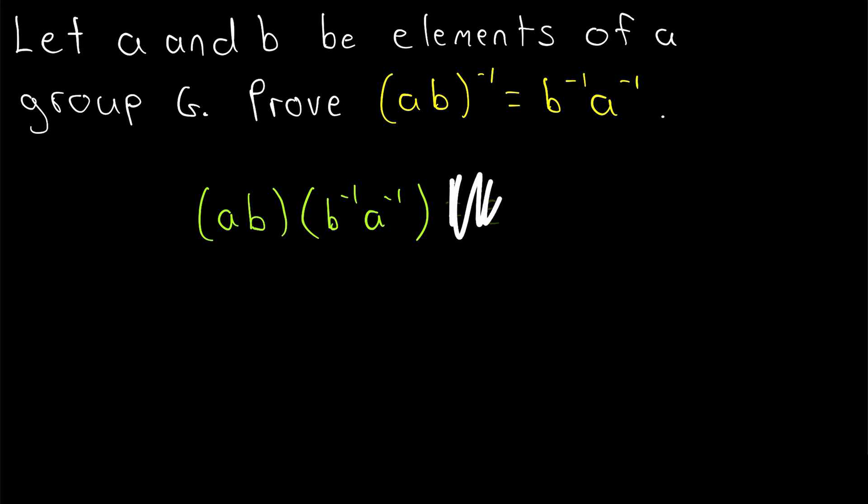The important part of this result that you should notice is that the inverse of A times B is B inverse A inverse, not A inverse times B inverse. So we see when we take the inverse of their product, their order reverses.